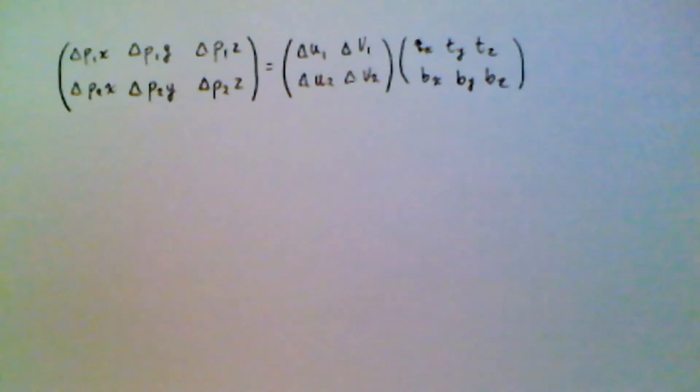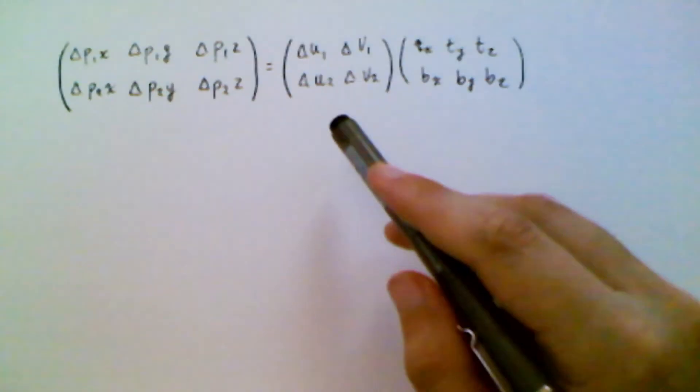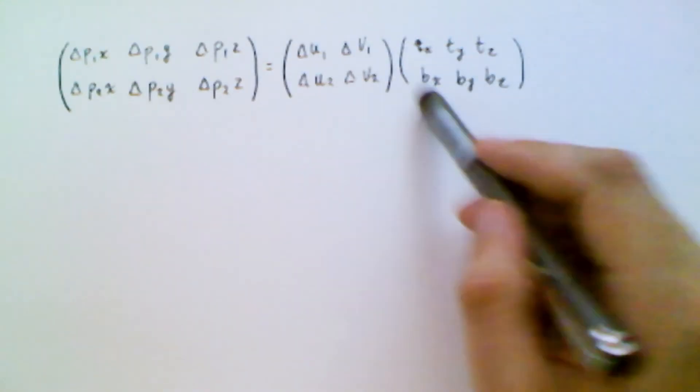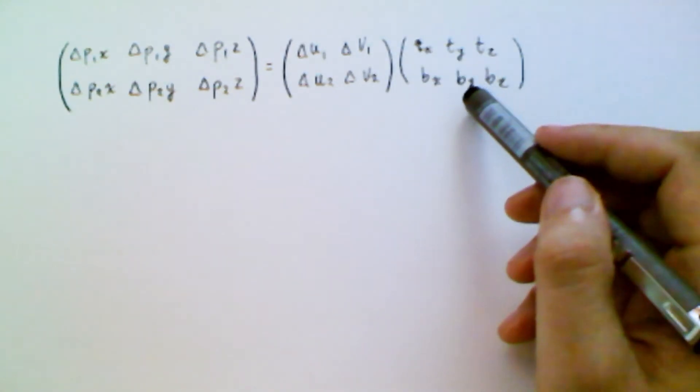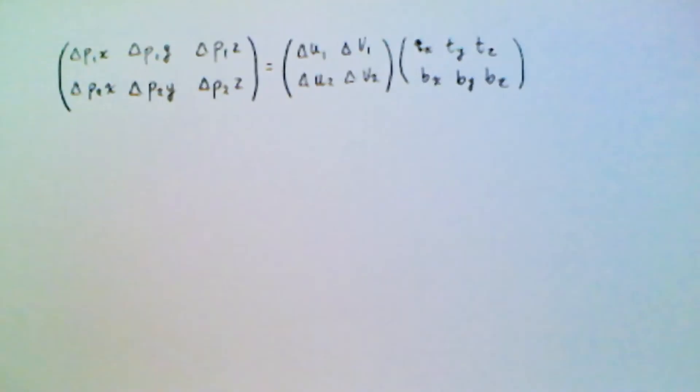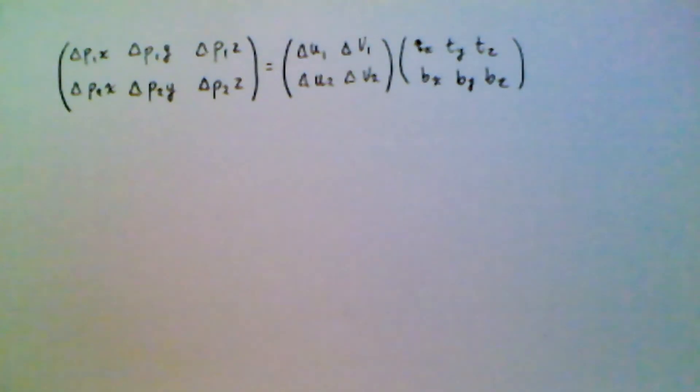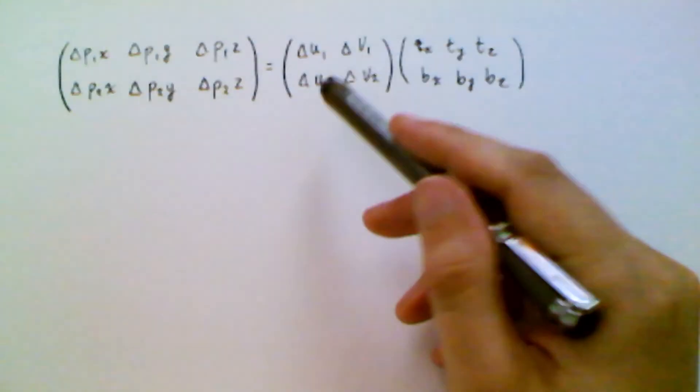So you can probably see where we're going from here. The goal is to solve for these, this matrix, get the two rows, and that's the tangent and the bitangent, and what we're going to do is we're going to multiply by the inverse of this matrix here.